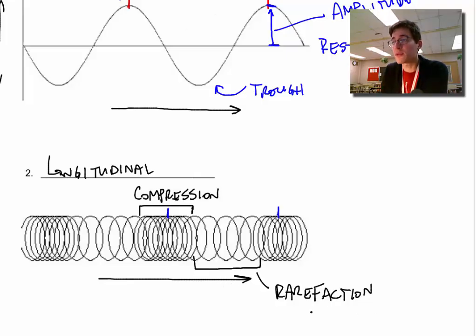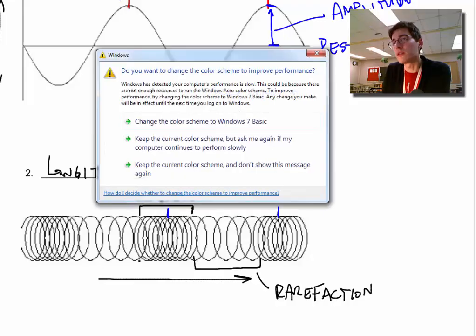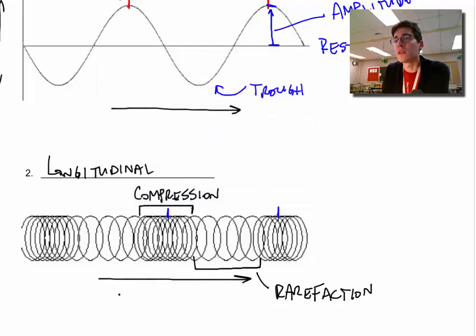And the size of the rarefaction is the amplitude. So with transverse, we look at the height above the rest position. With longitudinal waves, we're looking at the size of the compression. So if this was much thicker, it would be a much stronger wave. Longitudinal waves, these are sound waves. So the longer or the larger the sound, the larger the compression. And we're going to take a look at some videos on this.